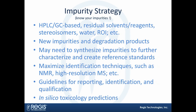Knowing your impurities always overlaps with the analytical package idea. We all know you have your well-known impurities like chromatographic base, residual solvents, water, ROI, and metals. It's good to always think about what you do when you have new impurities or you see degradation products in a stability study. Your organization should have an SOP or guideline for how you handle that. You may need to synthesize impurities to characterize them and make reference standards of them.